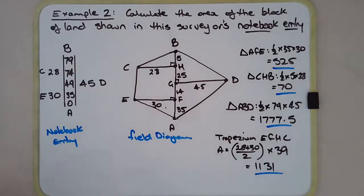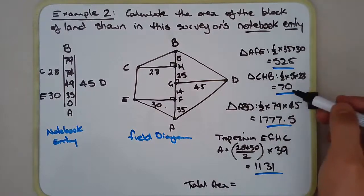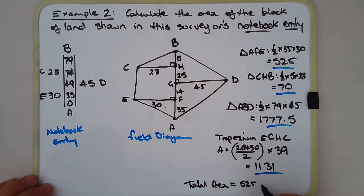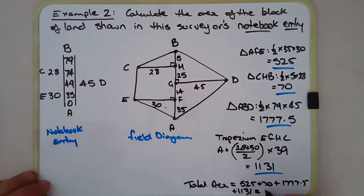Now if we add up these four numbers in blue. So the total area is equal to 525 plus 70. So I might just write these in 525 plus 70 plus 1777.5 plus 1131 equals. And just add the last 1131. And we get 3503.5 square meters.